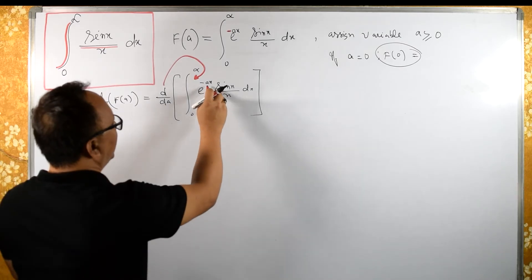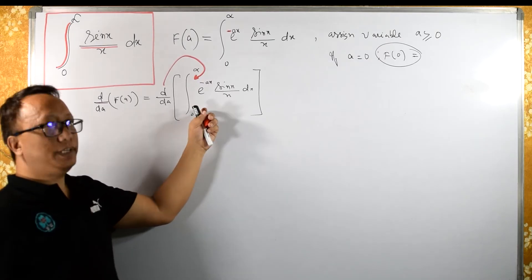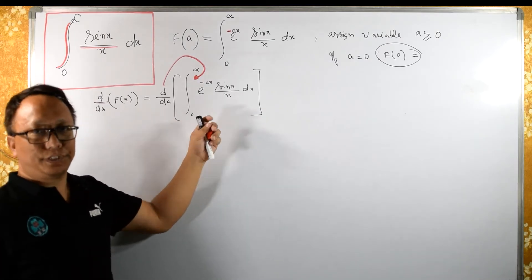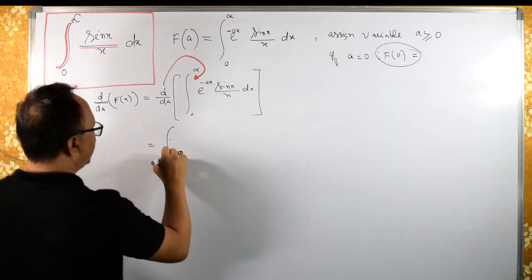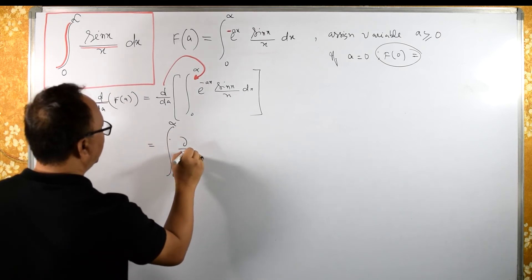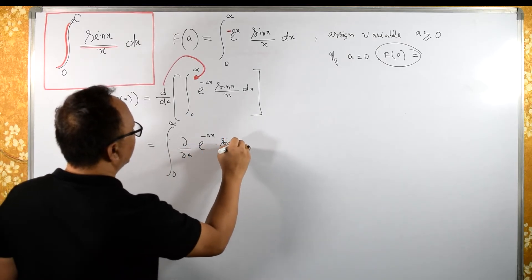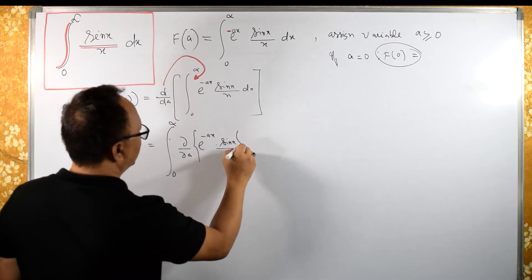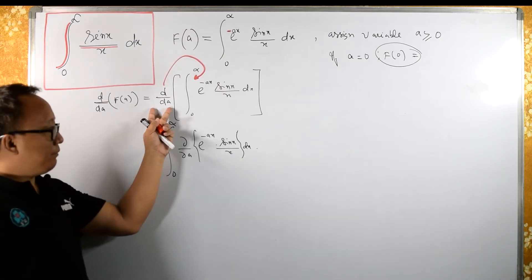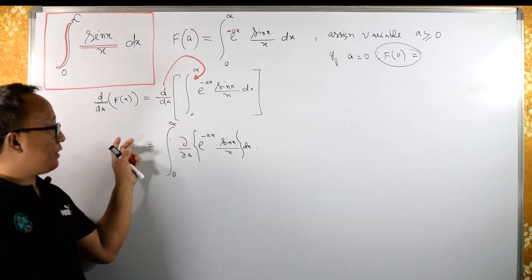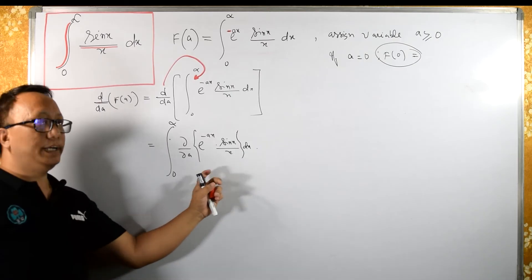We need to send this differentiation inside the integral. Here we have variable a and variable x. By Leibniz rule, we send the differentiation inside, and it becomes a partial differentiation. Therefore this becomes the integral from 0 to infinity of the partial derivative with respect to a of e^(-ax) sin(x)/x dx. The integration is outside, so we need to partially differentiate with respect to a and then integrate.